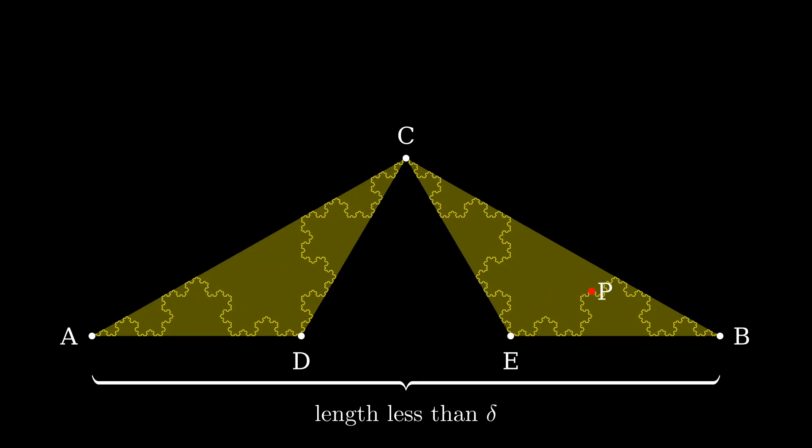Now suppose the point P was in the right triangle. Then the same argument as before would show that the angle theta between the secant lines containing the segments PC and PD would also be greater than or equal to 30 degrees. In this case, the points C and D are both on the Koch curve to the left side of the point P since they are in the left isosceles triangle.